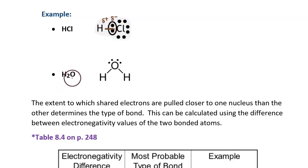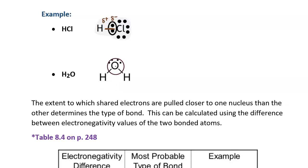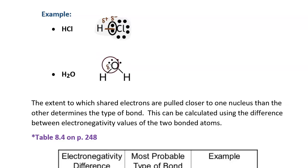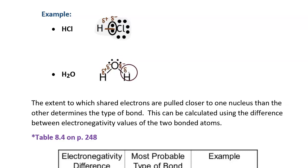Now let's look at H2O, a water molecule. Here's the dot diagram. The dashed lines are the covalent bonds connecting the hydrogen to the oxygen. Oxygen is more electronegative than hydrogen, so the shared pair of electrons is pulled closer to the oxygen, making that end of the bond slightly negative — shown as δ−. The hydrogen end of the bond is slightly positive — δ+. Similarly for the other covalent bond: δ− on the oxygen end and δ+ on the hydrogen end.